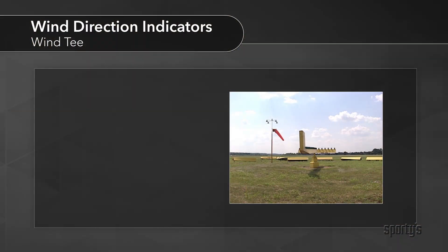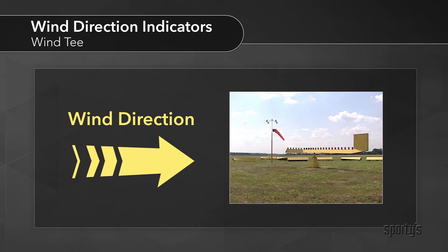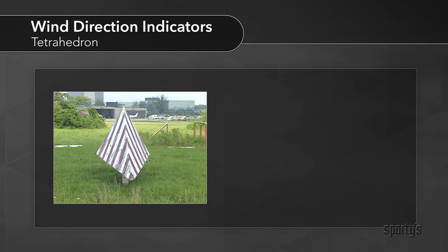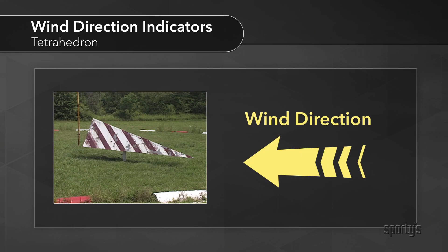The wind tee resembles a small airplane. The vertical stabilizer serves to make the wind tee weather-vane into the wind, so you should take off and land the same direction the wind tee is pointing. The tetrahedron resembles a flattened pyramid. The narrow tip of the tetrahedron points into the wind.